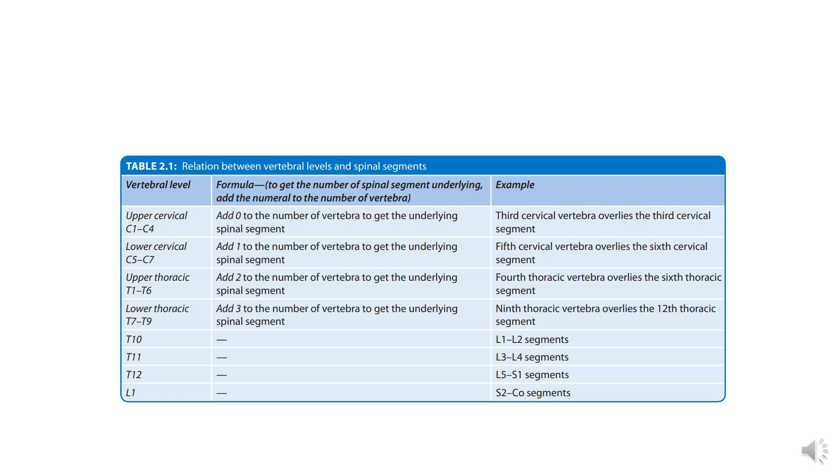So in upper cervical region, that is C1 to C4, we add 0. So the same spinal segment lies against the vertebral column. For example, third cervical vertebrae overlies the third cervical segment.